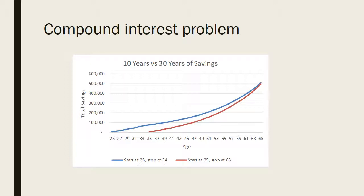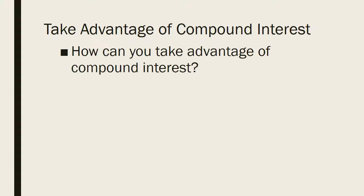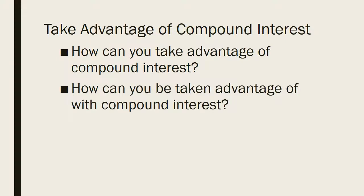The reason I like this example is that the sooner you start, no matter when it is, that money will compound, continue to double, and have more effect than starting later in life. So no matter your age — whether you're 18 or older — think about how you can take advantage of compound interest. But you can also flip it around: how can you be taken advantage of with compound interest? This relates to shadier types of liabilities and debt, where people use compound interest against you, so you end up paying two, three, or even four times the value of a loan.